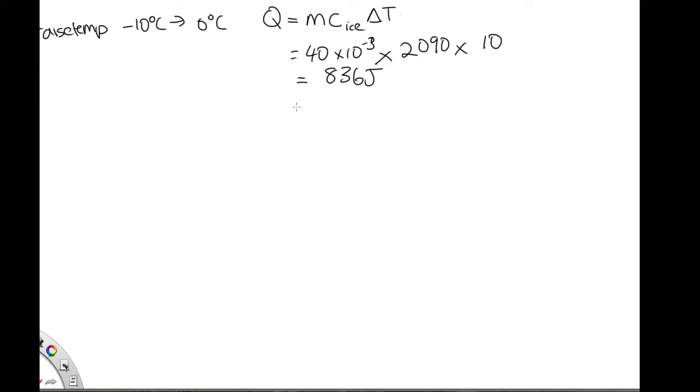Now we've got ice at 0°C. Next, energy goes into melting the ice. The energy required is Q = mL, where m is 40 grams and the latent heat of fusion for water is 3.33 times 10 to the 5 J/kg. Solving this gives 13,320 joules for this step.